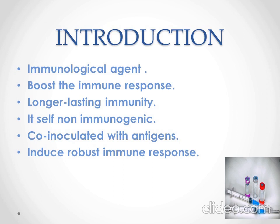The word 'adjuvant' is taken from the Latin word 'adjuvare', meaning 'to help'. They are designed to improve only immunogenic vaccines. Adjuvants were originally described by Ramon as substances used in combination with a specific antigen that produced a more robust immune response than the antigen alone, thus encompassing a wide range of materials. Adjuvants may be added to a vaccine to boost the immune response, to produce more antibodies and longer-lasting immunity, thereby minimizing the dose of antigen needed.